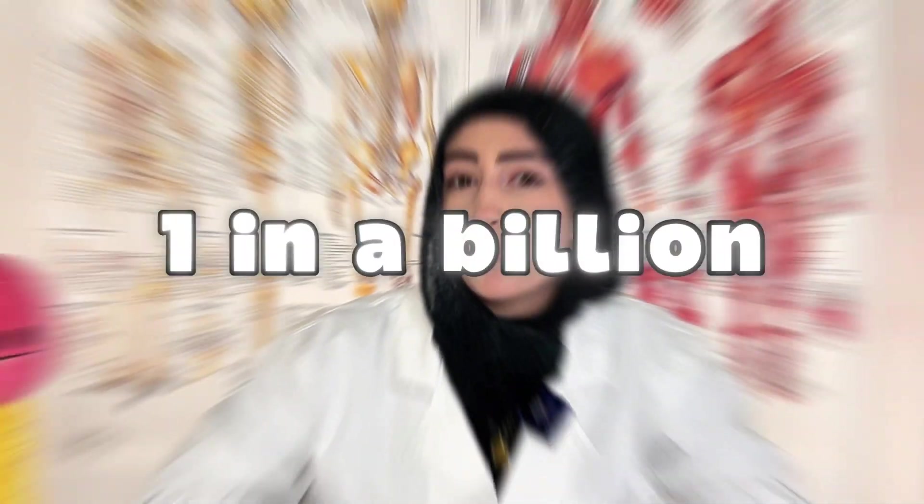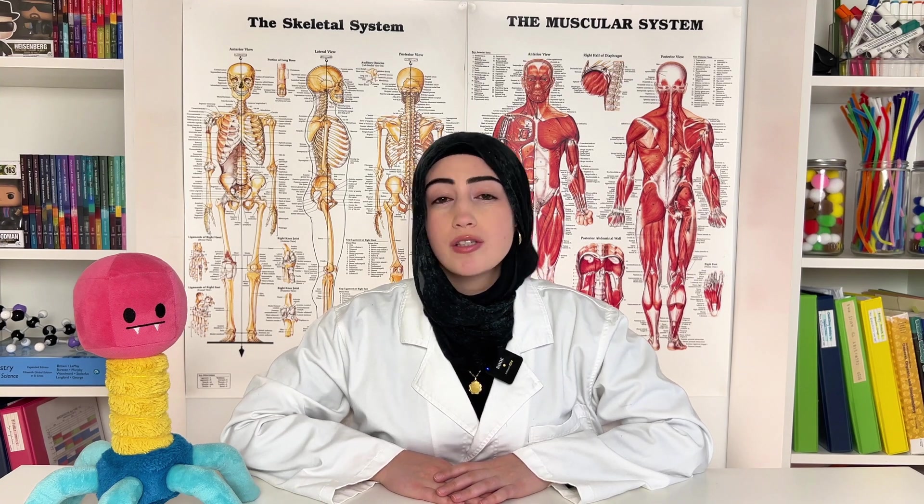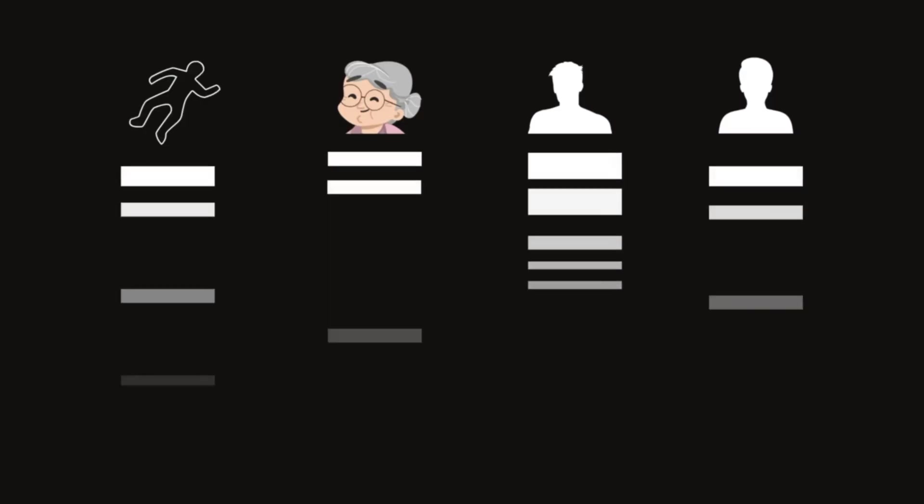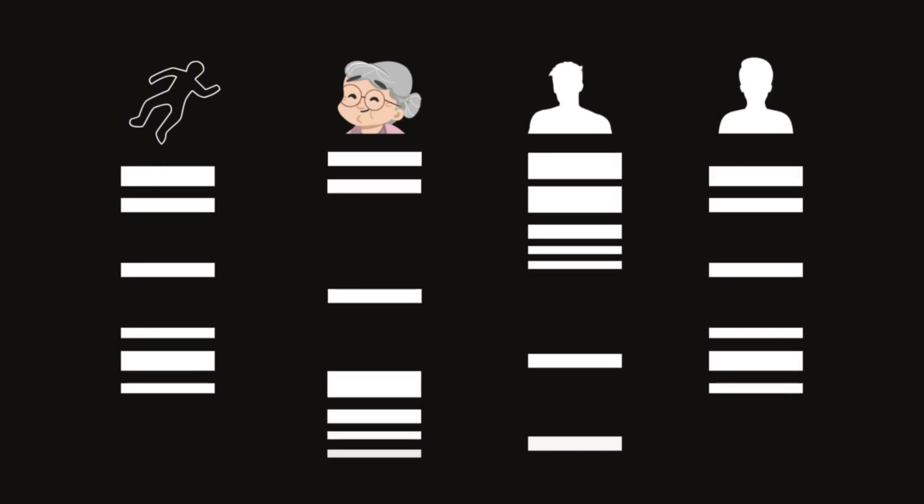Testing 13 to 20 STR regions means the odds of two completely unrelated people having the same STR profile is roughly one in a billion. Now going back to the case — let's analyze our gel and see whose genetic profile matches.